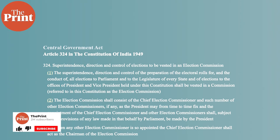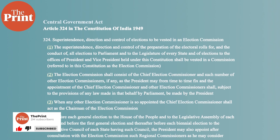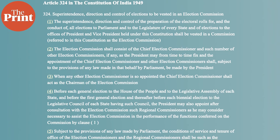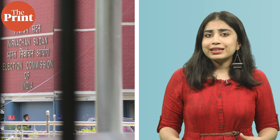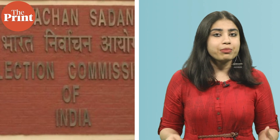In response to this petition, the Centre had asserted that the court must respect the principle of separation of powers between different organs of the state and should refrain from interfering with the selection process of EC members under Article 324. However, the court brushed aside the Modi government's stiff opposition to its intervention, essentially saying that it was a myth that the judiciary cannot make a law. The court said that courts can make law and that it would not amount to transgression of the separation of powers principle.